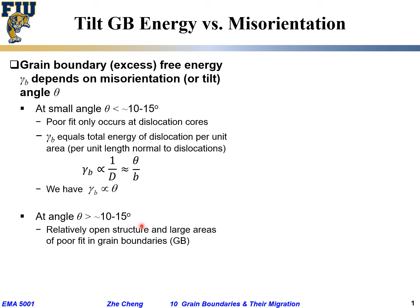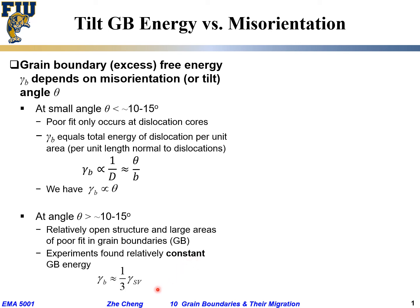The arrangement of atoms along the grain boundary is messed up so much that we have a relatively open structure and poor fit between the two grains along the boundary. In that case, the grain boundary energy remains relatively constant — it doesn't matter how much further the misorientation angle increases beyond 10 to 15 degrees. It's already disordered enough that additional misorientation makes little difference.